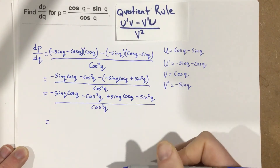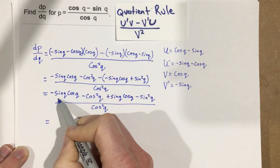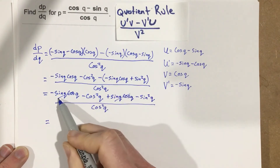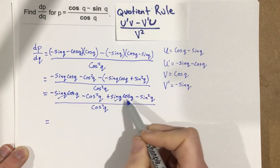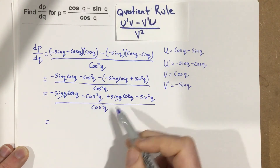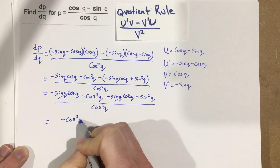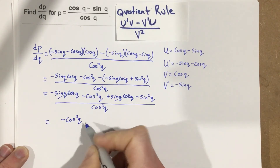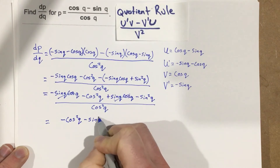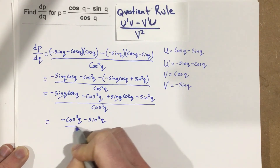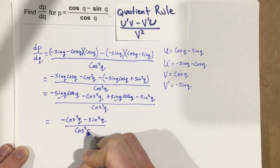Now we can see a cancellation: we have negative sine Q cosine Q and positive sine Q cosine Q, which cancel out. So we're left with negative cosine squared Q minus sine squared Q, all over cosine squared Q.